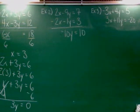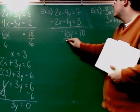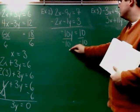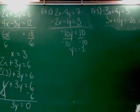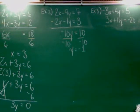So I've got negative 10 Y equals 10. Well, that means I've got to divide each side by negative 10. When I do that, I get Y equals negative one. Halfway done.